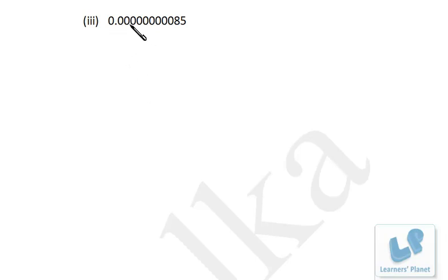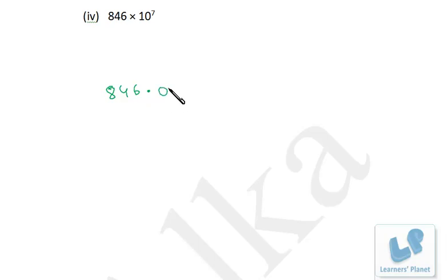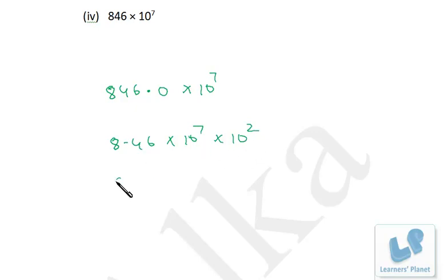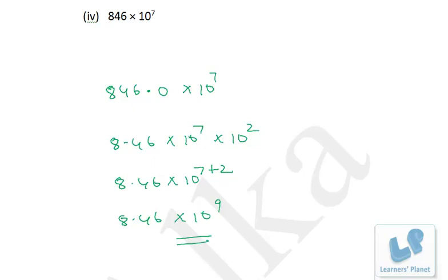In this case we have to shift the decimal 2 places to the left. So 846.0 times 10 raised to power 7. Since this and this are the same, we now shift the decimal 2 places towards the left. If we are shifting 2 places to the left, we multiply the entire expression by 10 squared. So it's 8.46 times 10 raised to 7, times 10 raised to 2, that is 10 raised to 7 plus 2. So it's 8.46 times 10 raised to power 9. If you are shifting to the left, just add the number of places to the exponent; if shifting to the right, deduct.